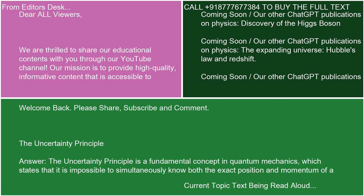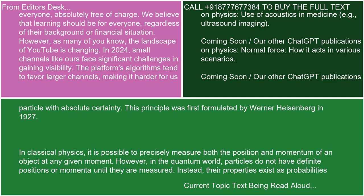Welcome back. The Uncertainty Principle is a fundamental concept in quantum mechanics, which states that it is impossible to simultaneously know both the exact position and momentum of a particle with absolute certainty. This principle was first formulated by Werner Heisenberg in 1927.